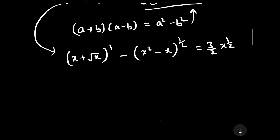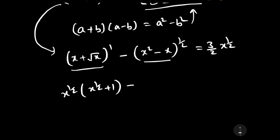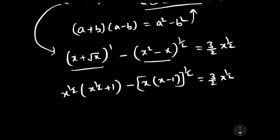Now take x to the power 1/2 common from this term. This will equal x to the power 1/2 times (x to the power 1/2 plus 1), since square root of x equals x to the power 1/2. Then taking common x from the next term gives x times (x minus 1), all to the power 1/2, equal to (3/2) x to the power 1/2.